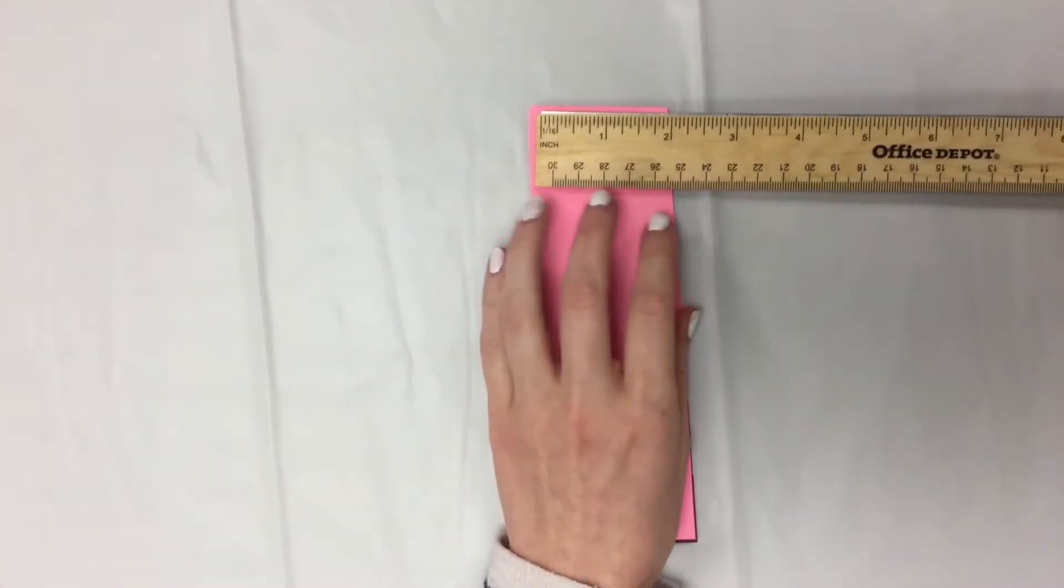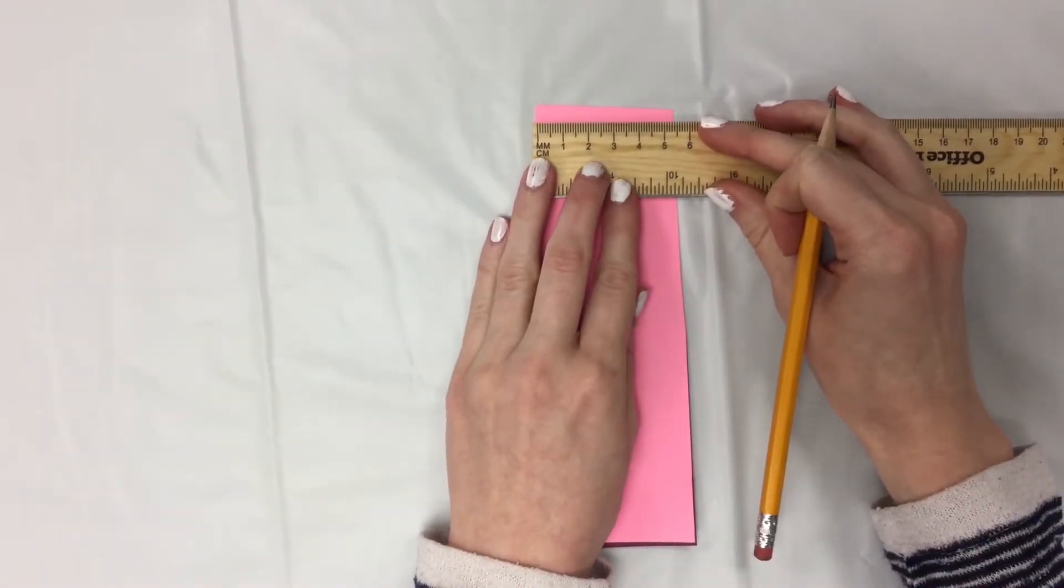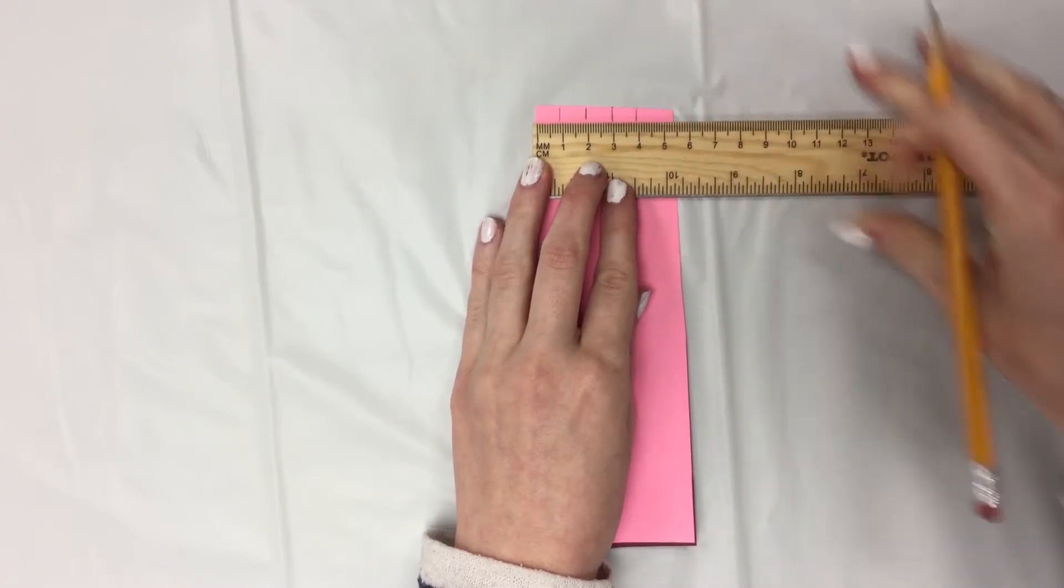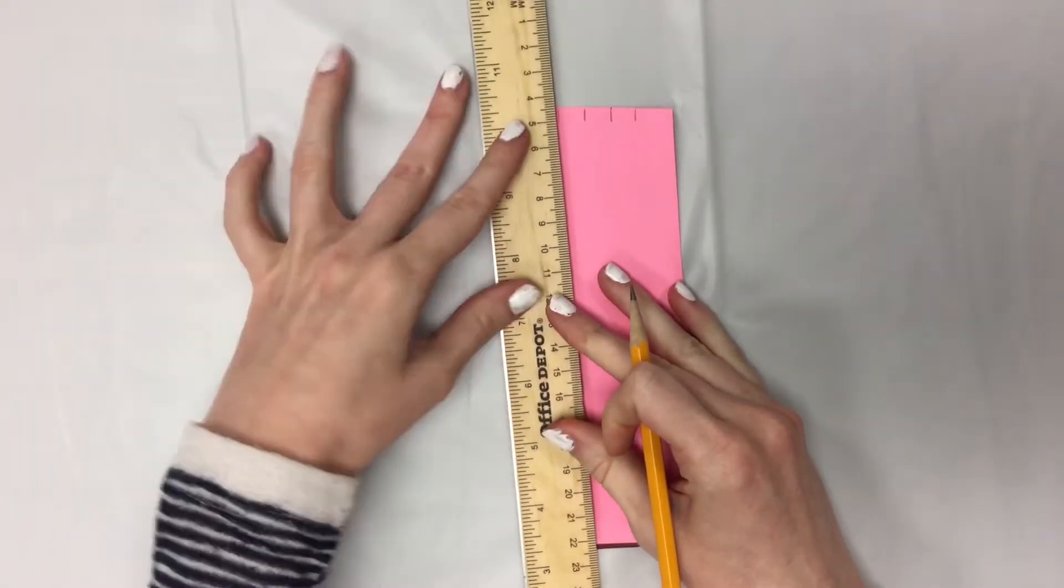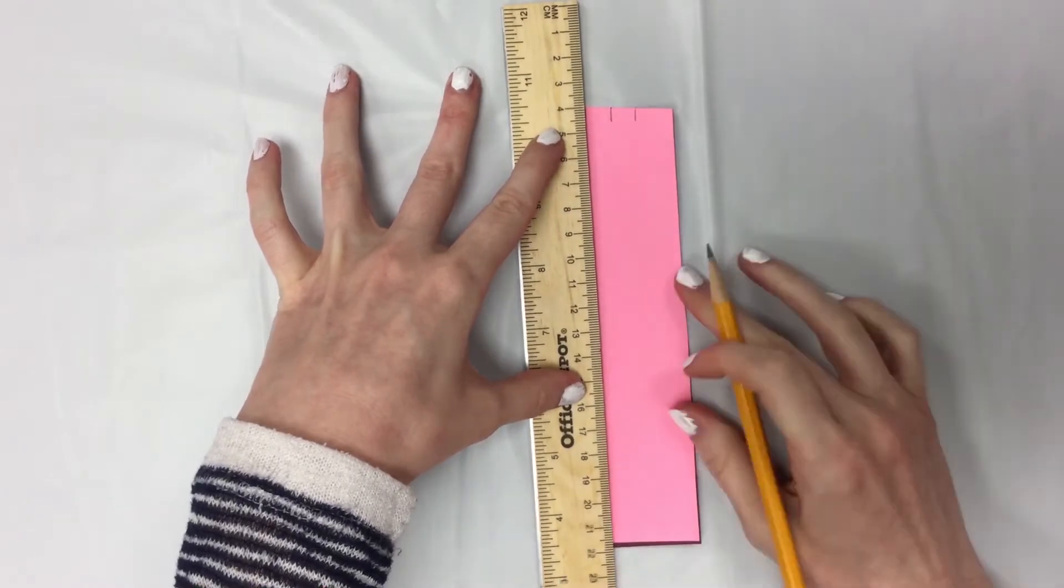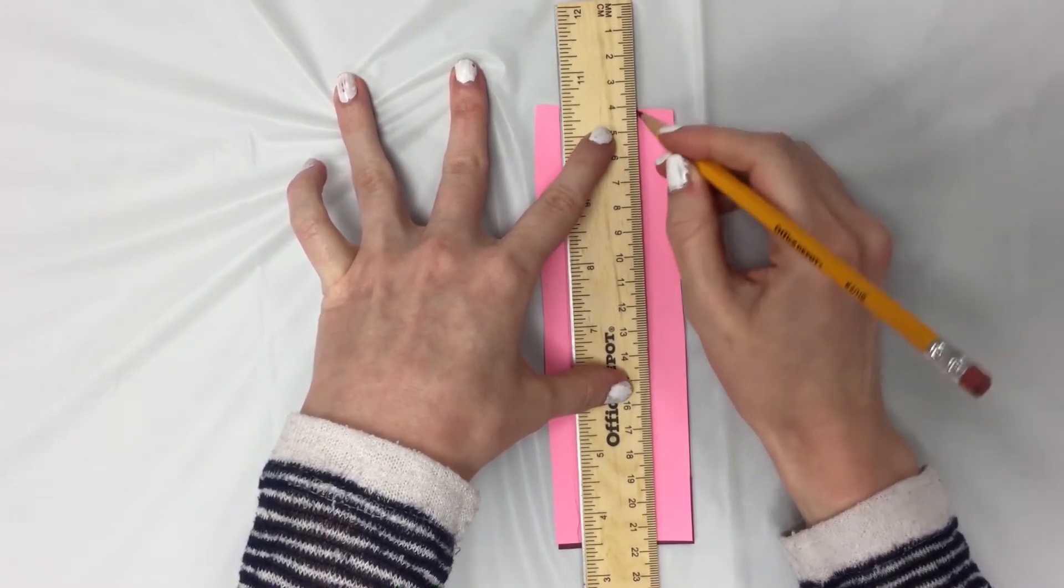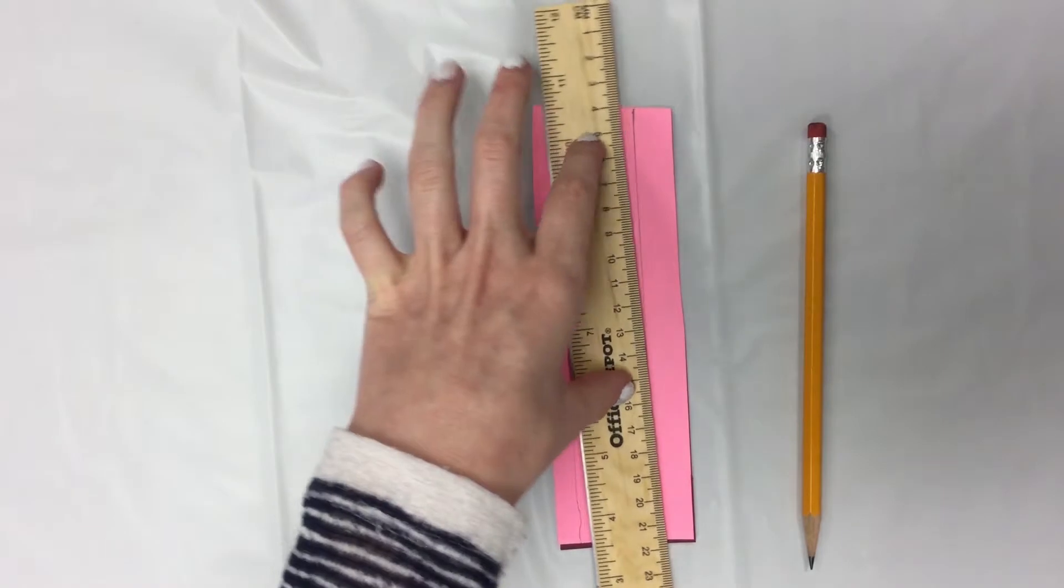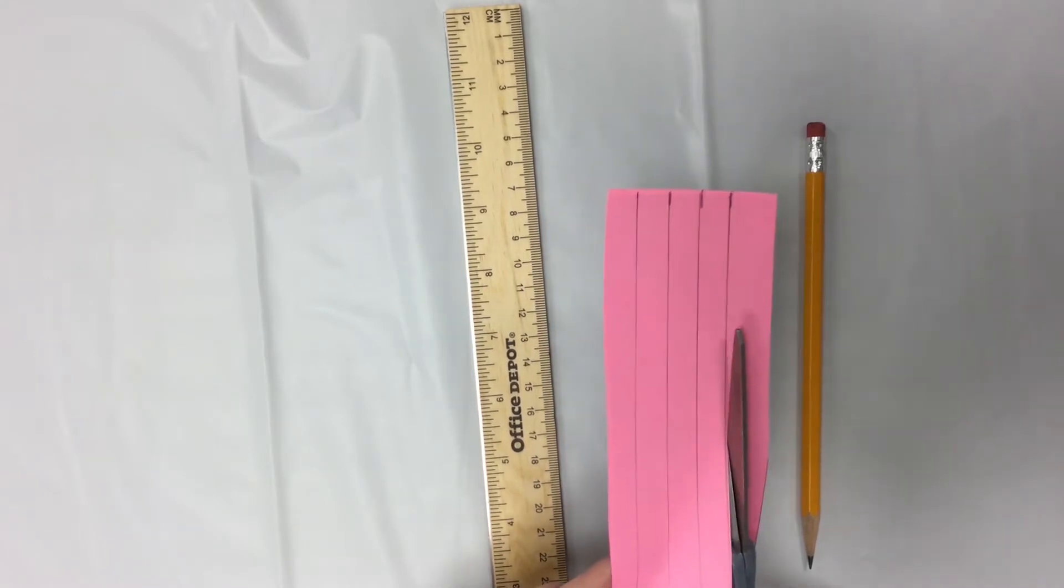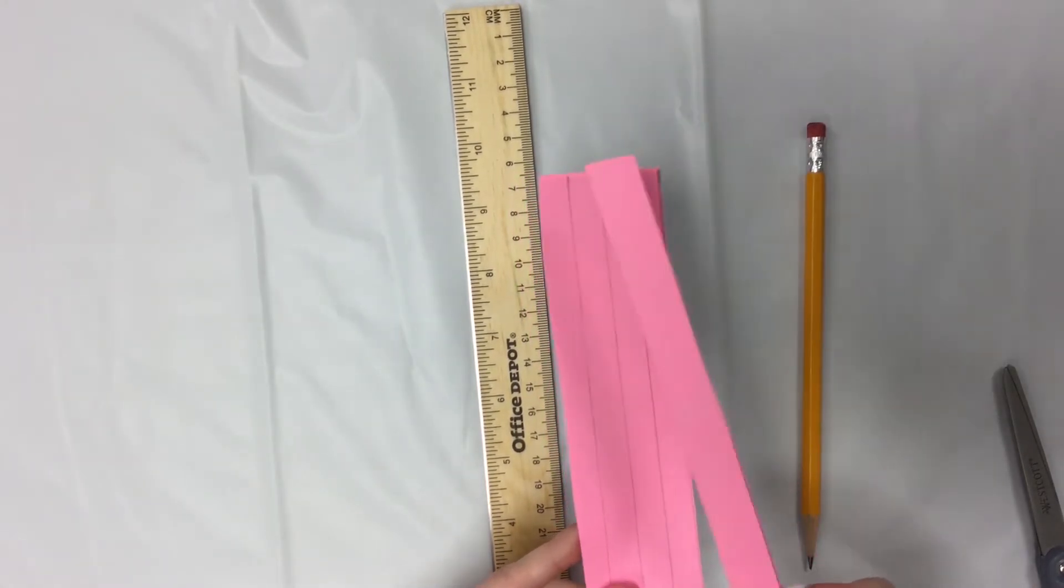So for the strips we're going to measure them one centimeter wide. We're going to need four strips, so I'll make four little marks, each of them one centimeter wide. Then we'll just cut them. If you do seven inches by two inches, you'll have a little bit left over and you won't need this. You can just throw it away.